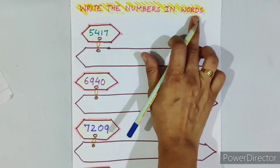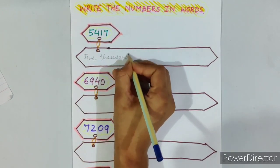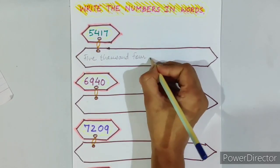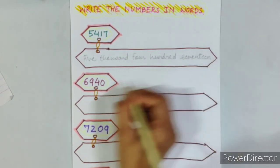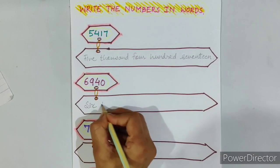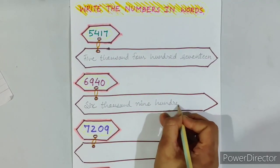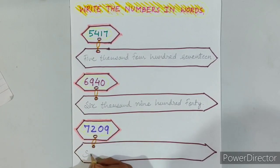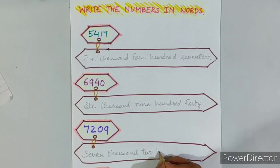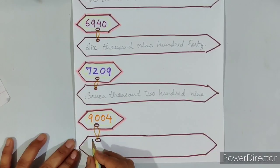Write the numbers in words: 5,000; 4,000; 7,000; 6,000; 9,000; 4,000; 7,000; 2,009; 9,000.